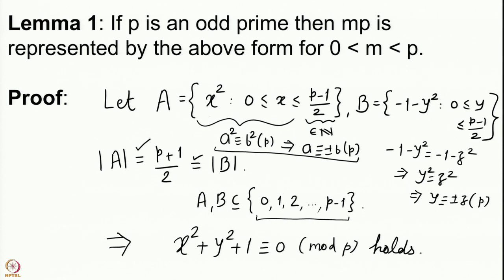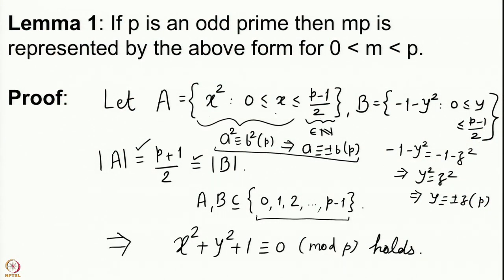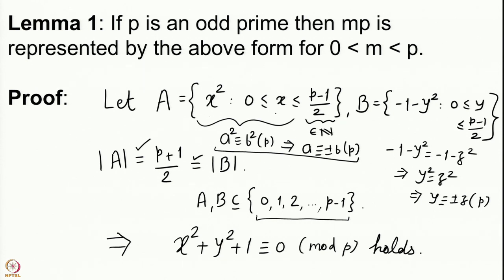We have proved that the equation x² + y² + 1 ≡ 0 mod p has a solution over ℤ/pℤ — we have produced one solution for this. So x² + y² + 1 is a multiple of p, since x and y are integers in a certain range, and therefore this particular sum of 3 squares is a multiple of p. Let us call this sum mp.